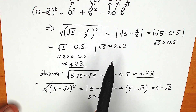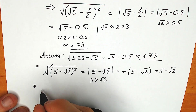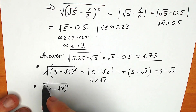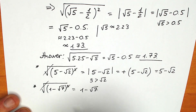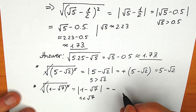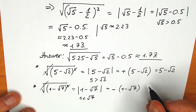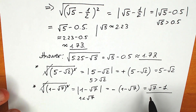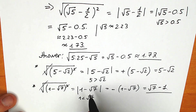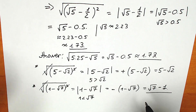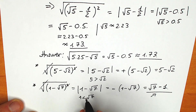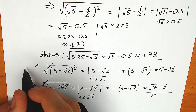But consider another case: square root of (1 − √7)². You can cancel it, but the answer is NOT 1 − √7. You need the absolute value brackets. Since 1 < √7, this expression is negative, so you must put a minus sign in front: −(1 − √7), which equals √7 − 1. This is extremely important — the correct answer here is √7 − 1, not 1 − √7, because a square root cannot be negative.